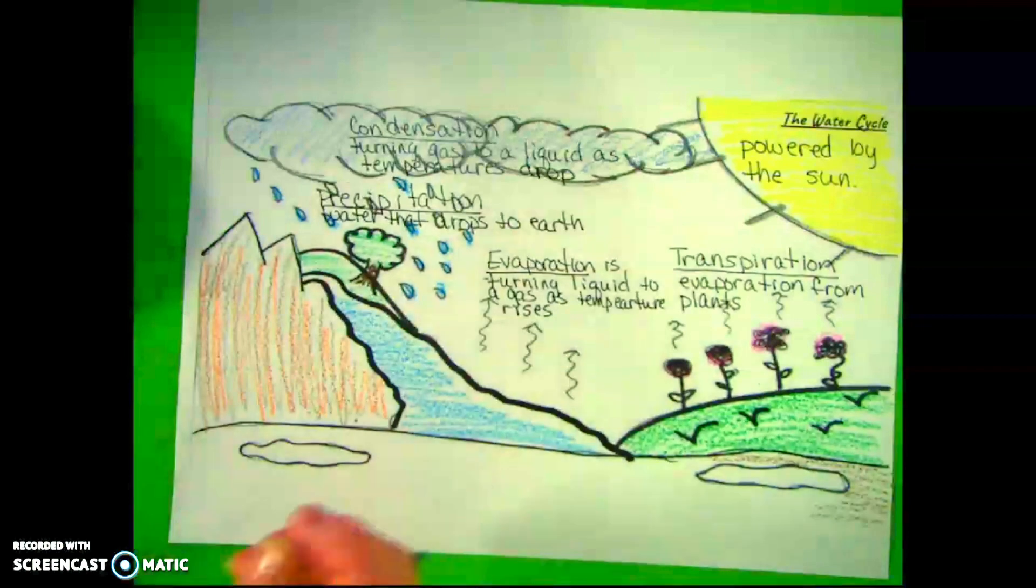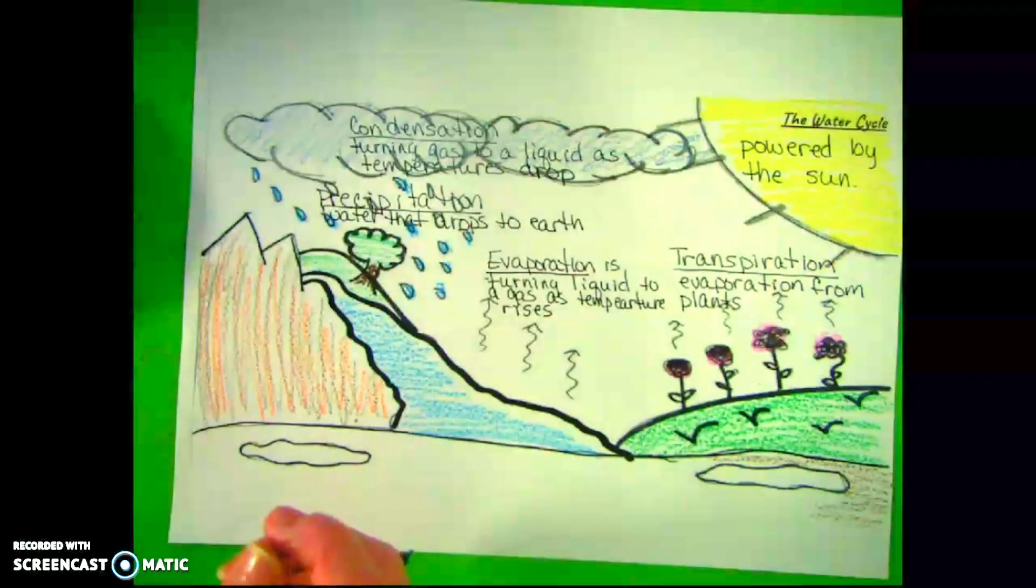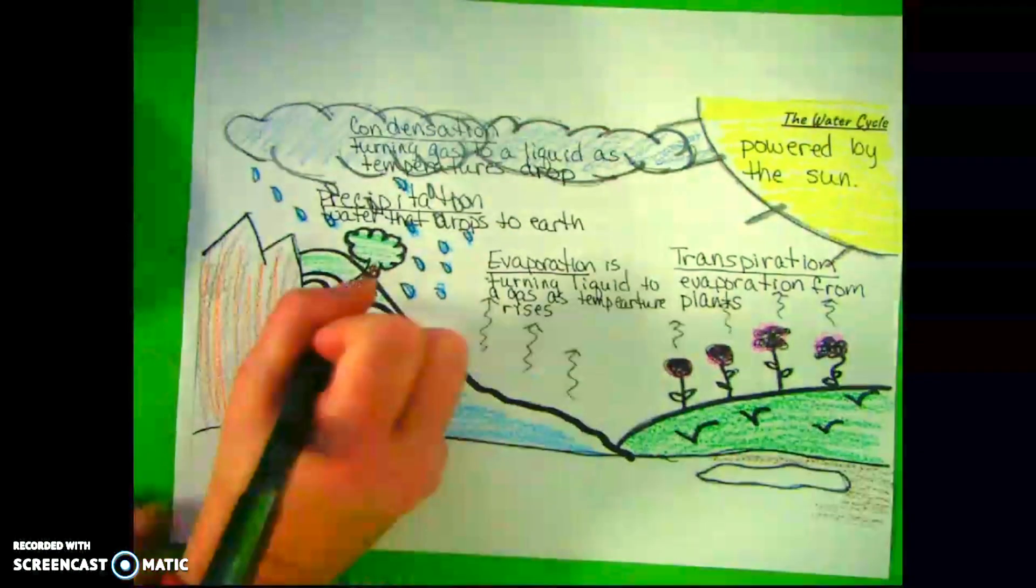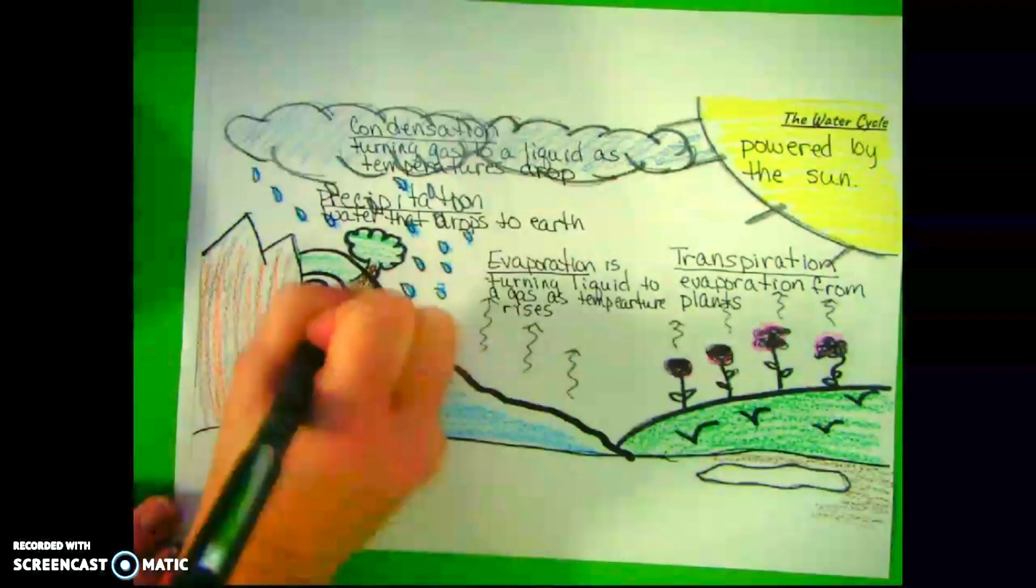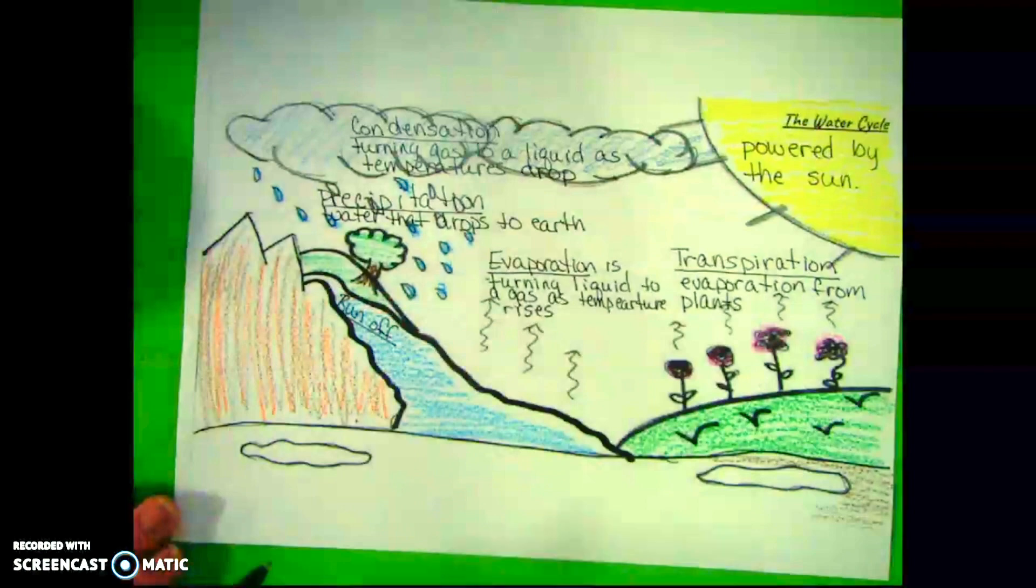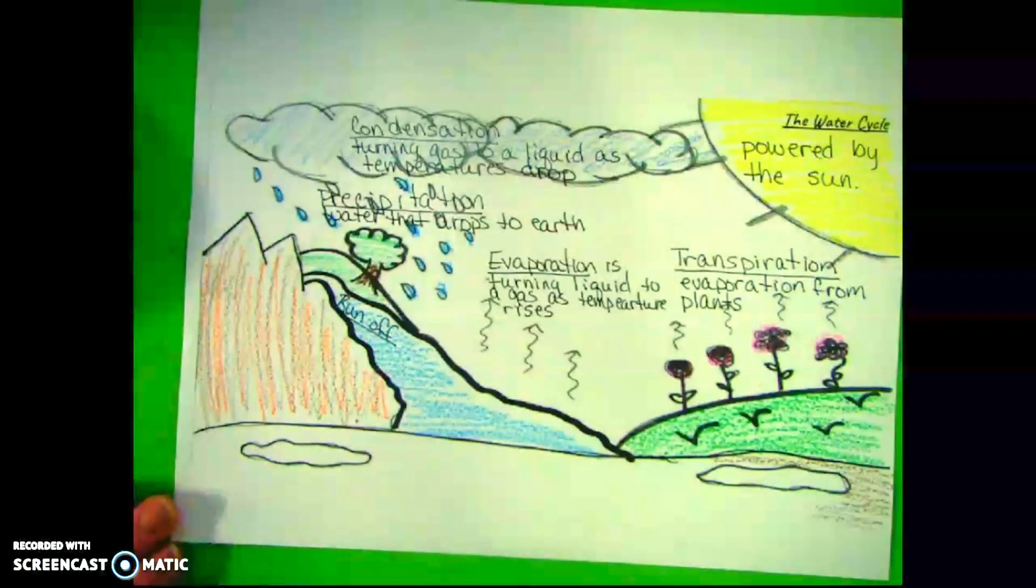The first one we are going to write about is runoff. Runoff is water that flows on the Earth's surface.